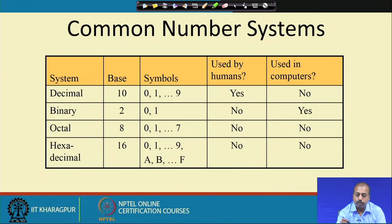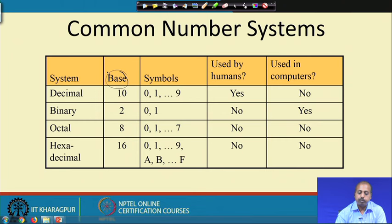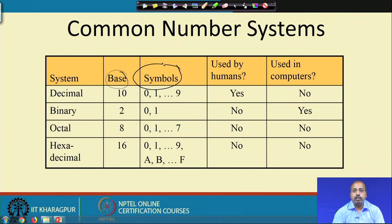Any number system we look into will have two important components. One is called the base of the number system, which represents how many symbols can be there — different types of symbols. The other part is the symbol itself. For any number system, you have to specify both. As soon as you tell me a base, we can assume there will be that many different types of symbols.